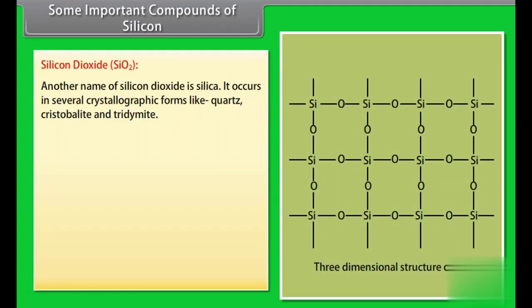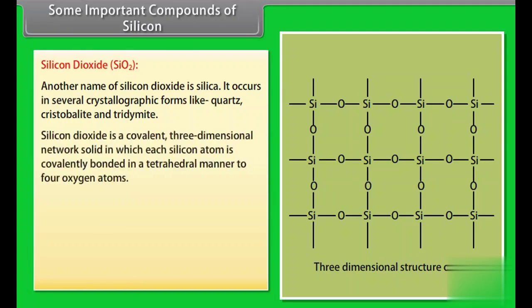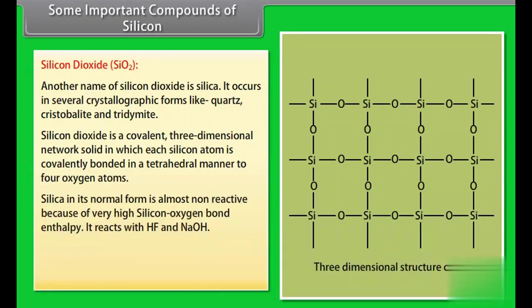Some important compounds of silicon. Silicon dioxide. Another name of silicon dioxide is silica. It occurs in several crystallographic forms like quartz, cristobalite and tridymite. Silicon dioxide is a covalent three-dimensional network solid in which each silicon atom is covalently bonded in a tetrahedral manner to four oxygen atoms. Silica in its normal form is almost non-reactive because of very high silicon-oxygen bond enthalpy. It reacts with HF and NaOH.